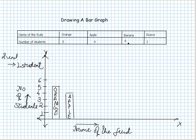Six students would like to eat banana, so let's draw the bar for it — the length for six is here. And two students would like to have guava, so here is the bar of length two.